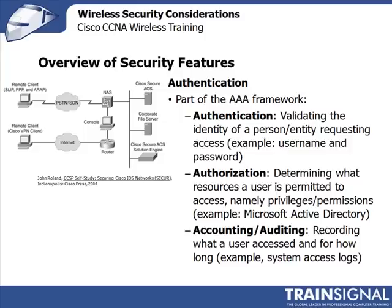The third part of AAA used to be called Accounting, which usually meant chargeback models — how long someone's been online. But now it's more of an auditing thing because things aren't typically being billed by the minute anymore. It's recording what a user has accessed, for how long, and what parts of the system they were involved in. System access logs, for instance, can be a part of accounting and auditing.